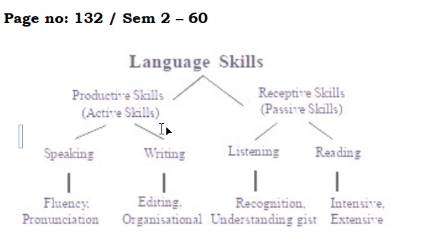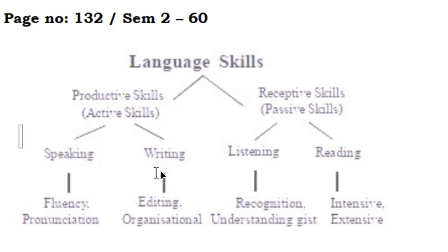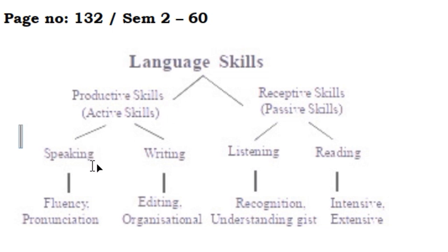Active Skills: number 1 is Speaking, number 2 is Writing. Speaking and writing are productive active skills. We will be active and able to do the speaking and writing.